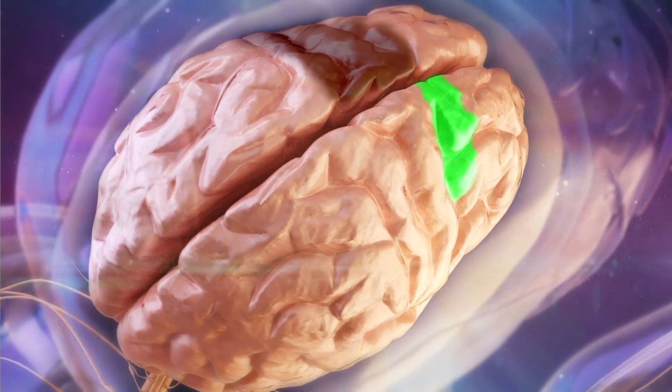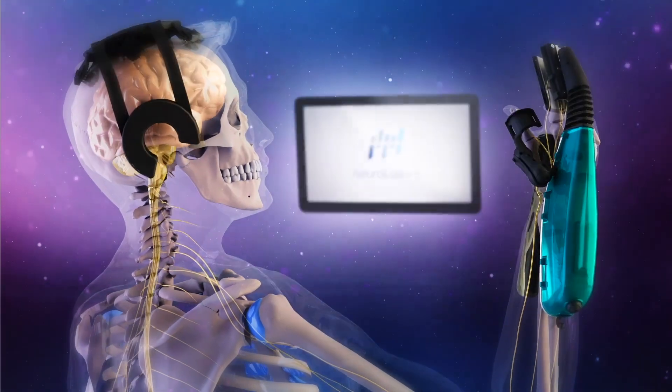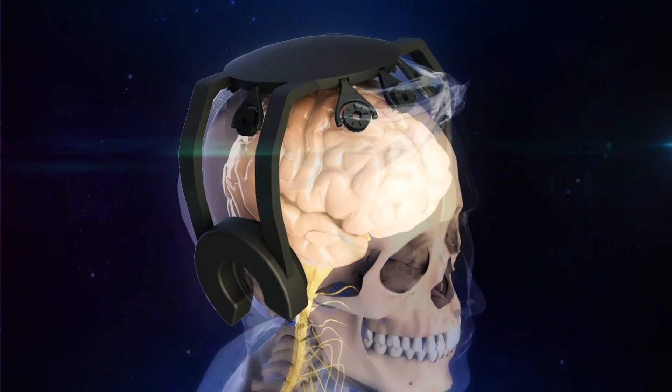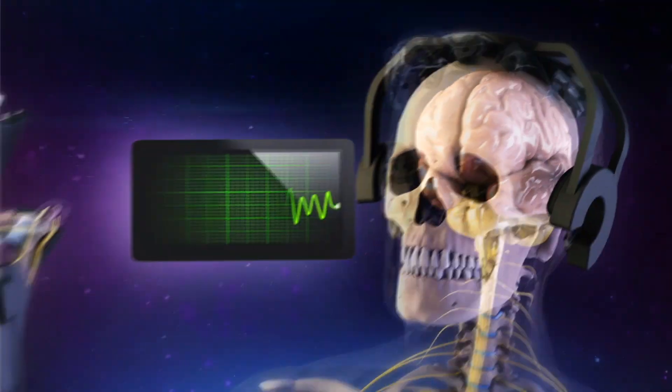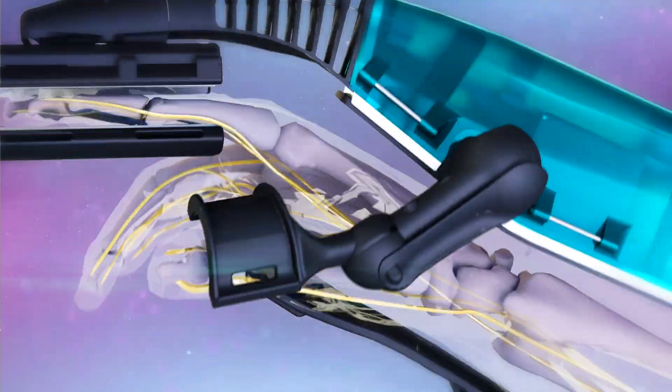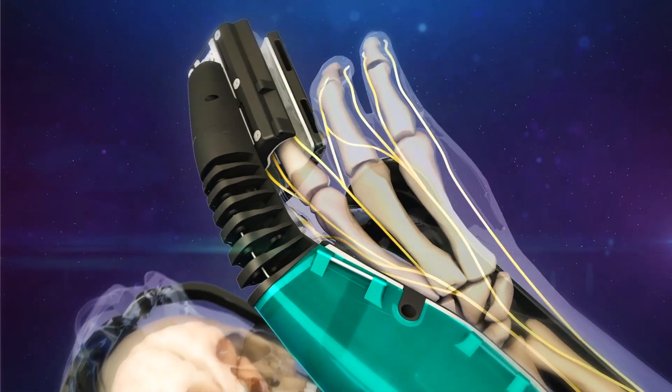We can detect brain signals associated with these intentions non-invasively using the EEG headset placed on the scalp. The signals or intentions to move the hand are translated by the brain-computer interface in our robotic handpiece, allowing the patient to open and close the hand even though they cannot physically do so on their own.